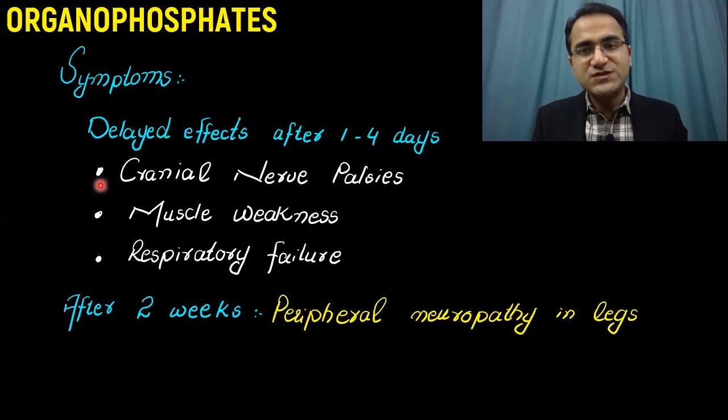Symptoms of organophosphate poisoning can also be delayed. Delayed effects are seen after one to four days as cranial nerve palsies, muscle weakness, and respiratory failure. And sometimes after two weeks, patient might present to you with peripheral neuropathy in the legs, which makes the diagnosis difficult.